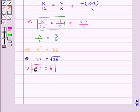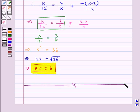So, thus we have got the values of k as plus minus 6. This is the final answer. This completes the session. Hope you have understood the solution of this question.